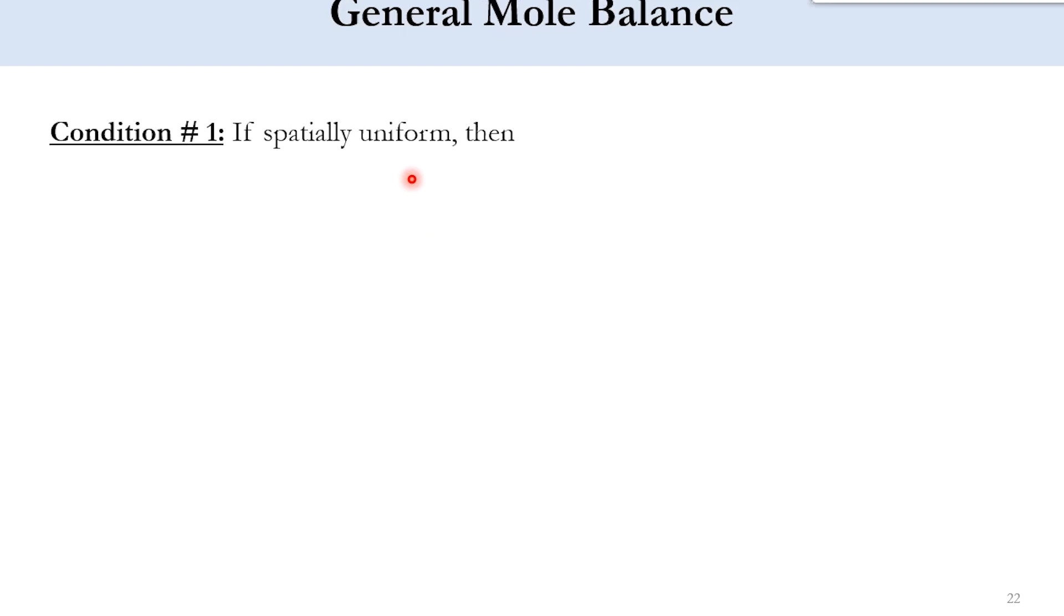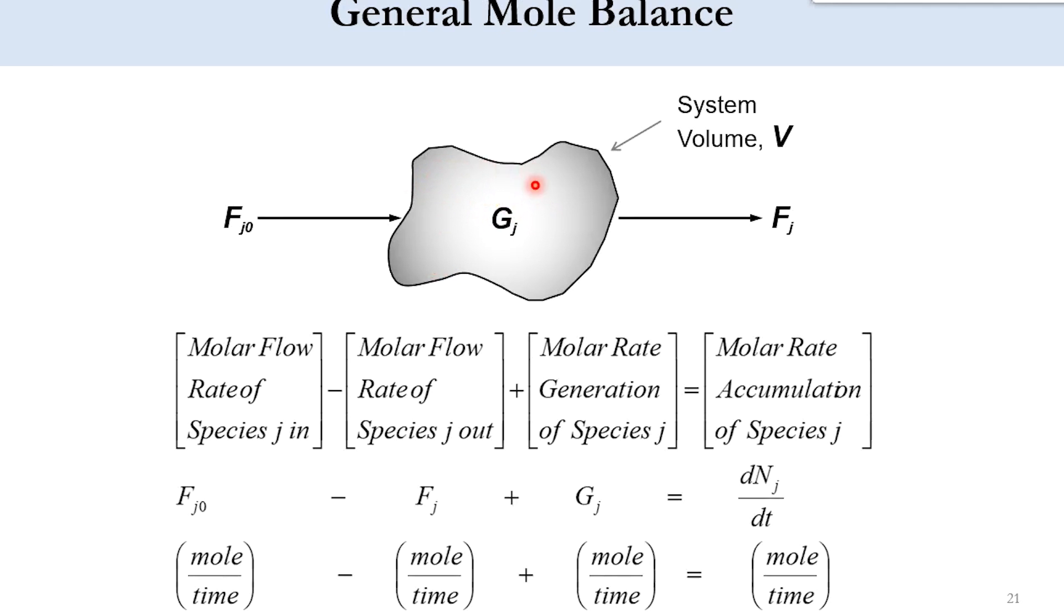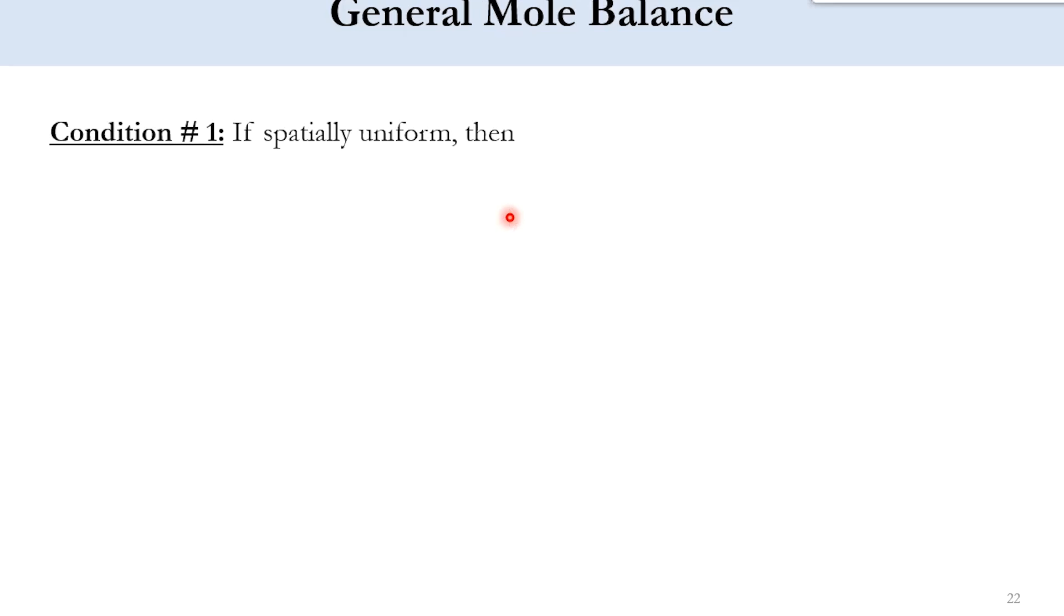Now if the system is spatially uniform, spatially uniform means if you look back here and if I divide this into 100 segments, then at all these 100 segments, the properties remain the same. So accordingly if the properties remain the same or we can say that it is spatially uniform, so accordingly g_j will become r_j, the rate of reaction or the rate multiplied by the volume. Obviously the final unit will be mole per time.